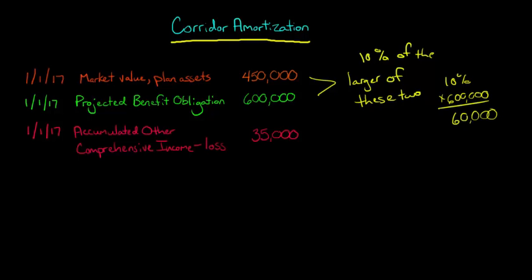Now this is the threshold. This $60,000 is the threshold against which we're going to compare our accumulated other comprehensive income account as it pertains to the actuarial gains or losses.